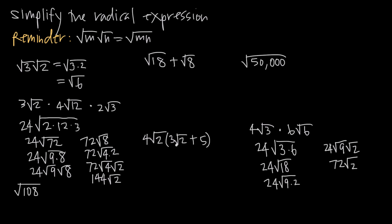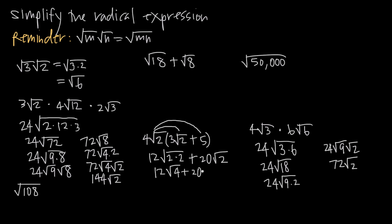This example — 4 square root of 2 times the quantity 3 square root 2 plus 5 — uses the distributive property. We multiply 4 root 2 by each term inside the binomial. For 4 root 2 times 3 root 2: coefficients 4 and 3 multiply to give 12, and root 2 times root 2 becomes the square root of 4. For 4 root 2 times 5: coefficients 4 and 5 multiply to give 20 root 2. So we have 12 root 4 plus 20 root 2. Since the square root of 4 is 2, we get 2 times 12 which is 24, giving us a final answer of 24 plus 20 root 2.